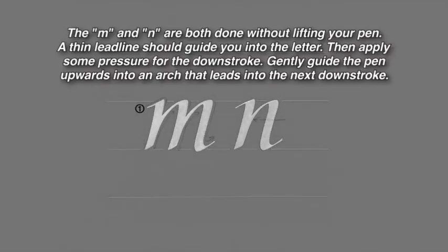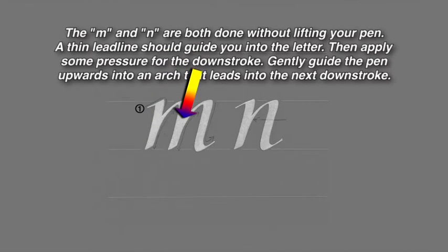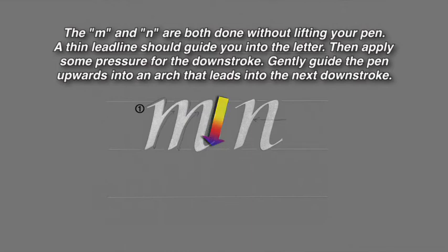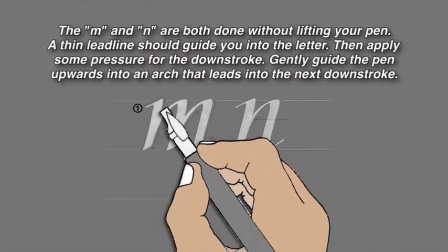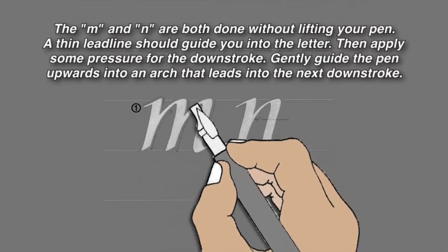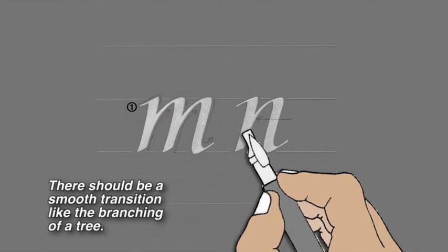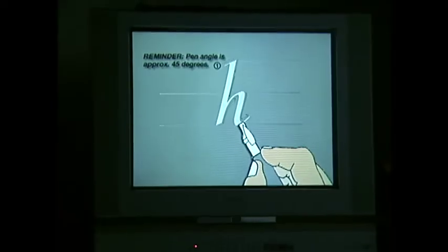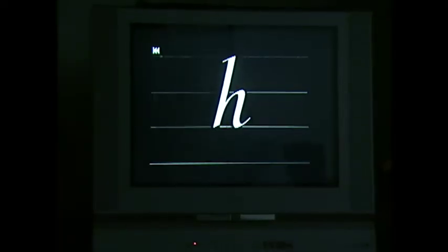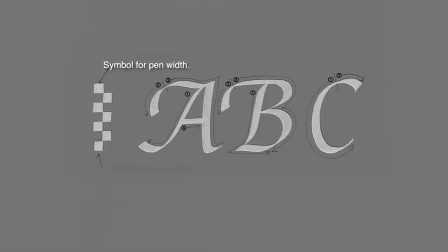The M and N are both done without lifting your pen. A thin lead line should guide into the letter. Then apply some pressure for the down stroke. Gently guide the pen upward into an arch that leads into the next down stroke. Create a smooth transition as the pen goes into the arch. There should be a smooth transition like the branching of a tree. It may help you to review your progress after each letter. Pause the tape between letters and practice a few times. Next, we will look at some capital letters.